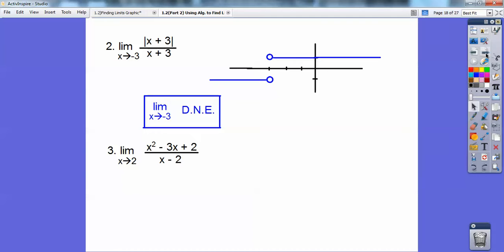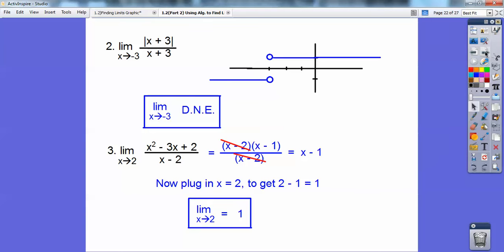All right, so this limit right here, this one factors. Factors of positive 2 that add to negative 3 are negative 2 times negative 3. So that baby factors, and then it cancels, and now you can plug in x equals 2. So I get 1, so then the limit of that guy is equal to 1. Easy enough.